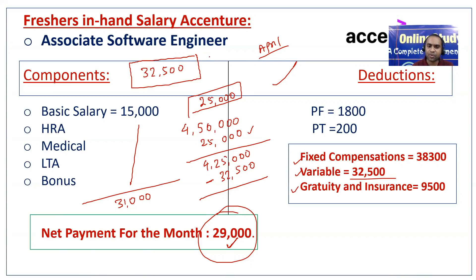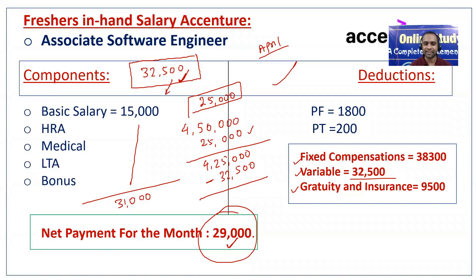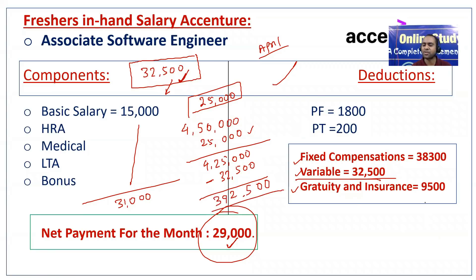So 32,500 rupees is your variable, which you receive at the end of the year. If your performance is good and the company performance is good, you will get 32,500 minimum — you can even get more than this. If performance is not that good, you will get less. This variable comes only once a year. From the day you join they will calculate your yearly performance and pay accordingly.